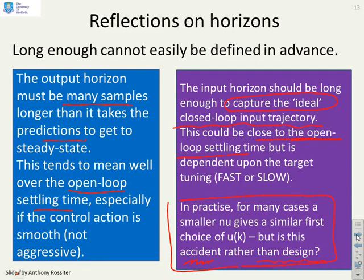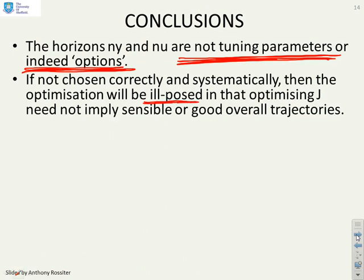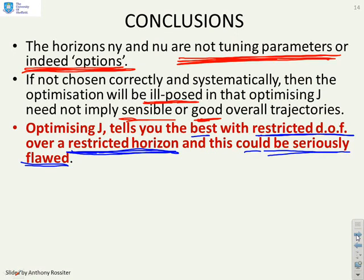Some conclusions then: the horizons ny and nu, and this is the key thing, they are not tuning parameters. And from my view they are not options because if you don't choose them right then it means your optimization is ill-posed, so that optimizing J need not imply sensible or good overall trajectories. Optimizing J tells you the best you can do with restricted degrees of freedom over a restricted horizon, and that's really important. So it's not necessarily optimal at all because you've arbitrarily restricted your degrees of freedom and restricted your horizon and therefore it could be seriously flawed this optimization if those restrictions are not wisely chosen.